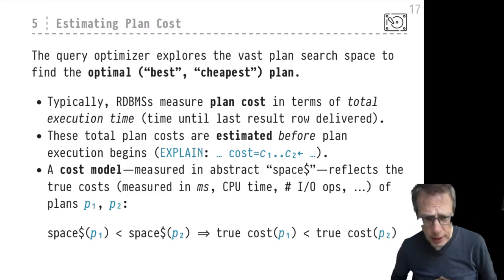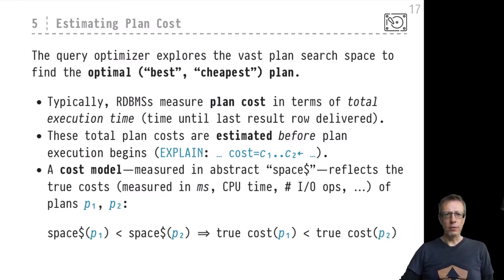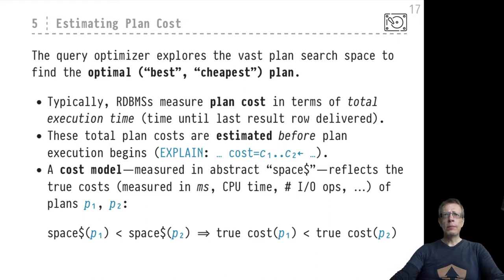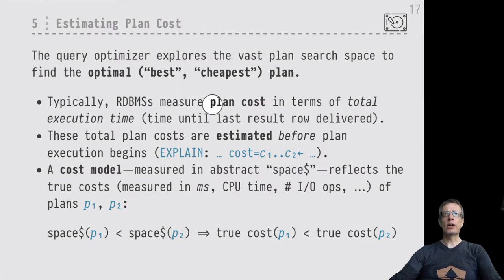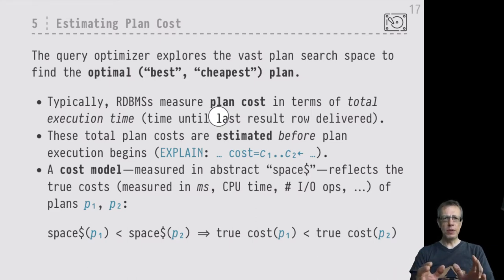What RDBMSs typically try to do is develop a cost measure that models the total execution time of a plan. The total execution time is the time we have to wait until the last row is finally delivered by the execution of that particular plan.